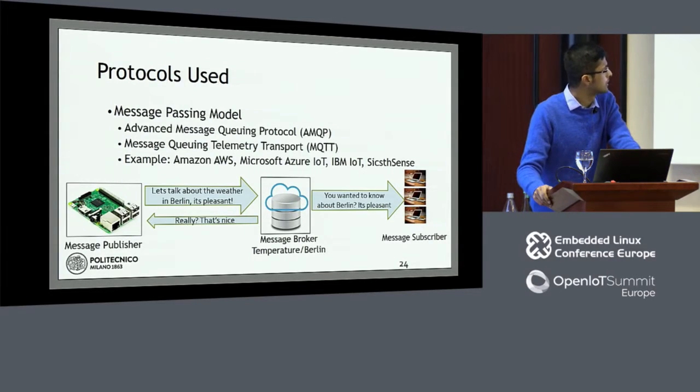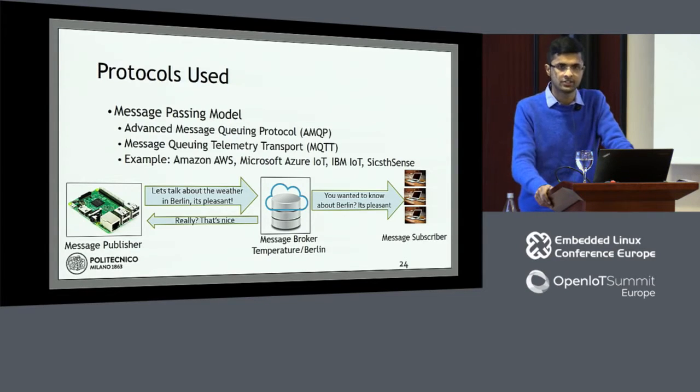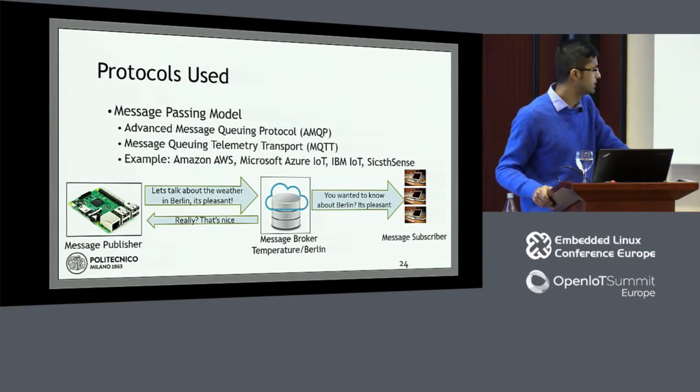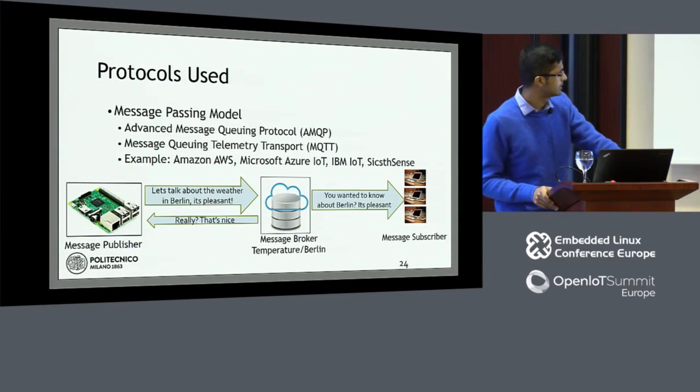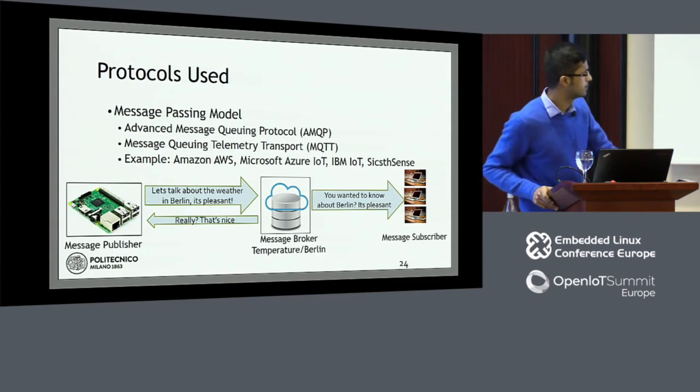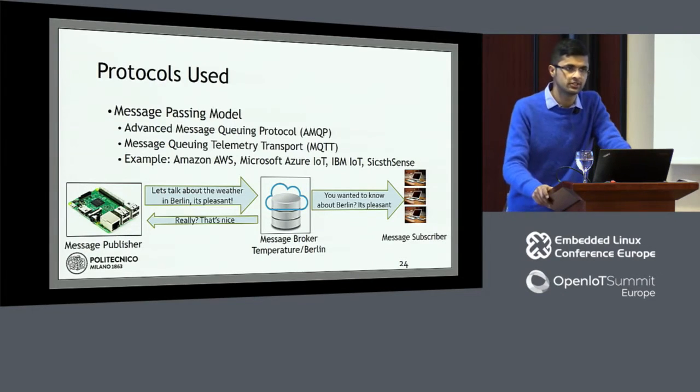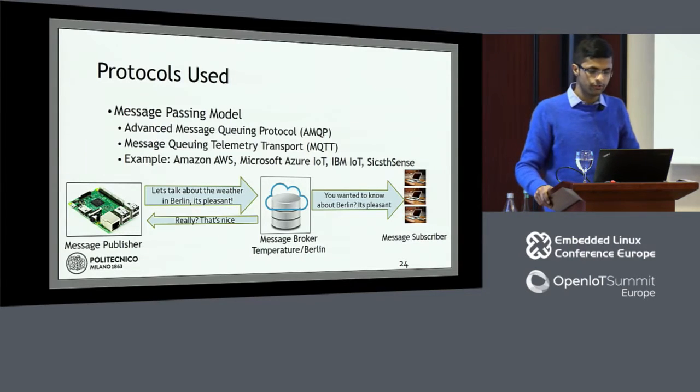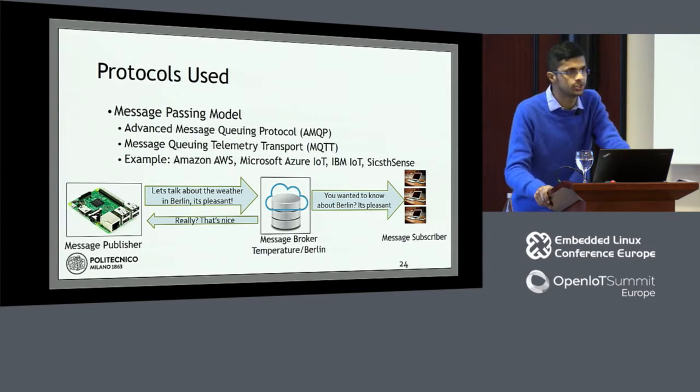Another model is message passing, where we have a message producer and a message consumer. Sensors produce data as message producers, and message consumers want to see what data is being generated. This is done via topics controlled by a broker endpoint. For example, devices publish temperature data in Berlin to a topic; the message broker forwards it to subscribers. This is a push interaction model, whereas request-response is a pull model where the user or application pulls data from the endpoint.